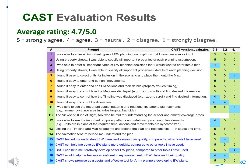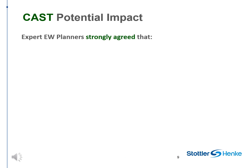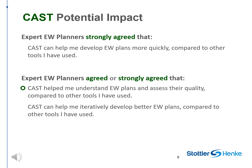CAST was evaluated by expert electronic warfare planners. After using the software, the experts expressed their level of agreement with 19 positive statements about the software's functionality, ease of use, visualization, and overall effectiveness. The planners strongly agreed that CAST can help them develop EW plans more quickly compared to other tools. The planners agreed or strongly agreed that CAST helped them understand EW plans and assess their quality, and that CAST can help them iteratively develop better plans.